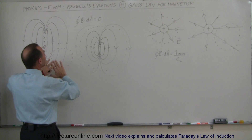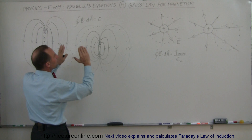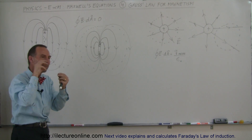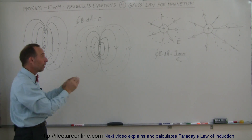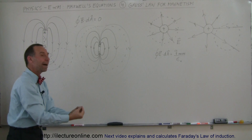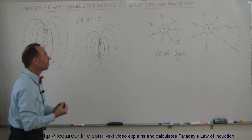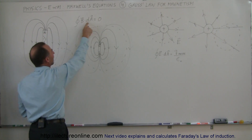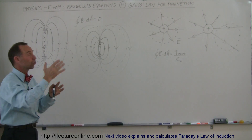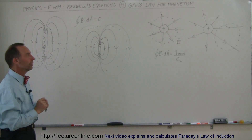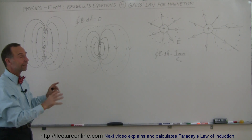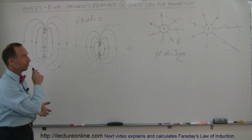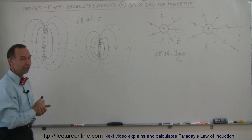Since there's never a means of encircling a point magnetic source — no magnetic monopole that has only a north or only a south — the surface integral of B dot dA will always be zero. That is Gauss's Law for Magnetism. If you understand this, you understand two of the four Maxwell's equations.